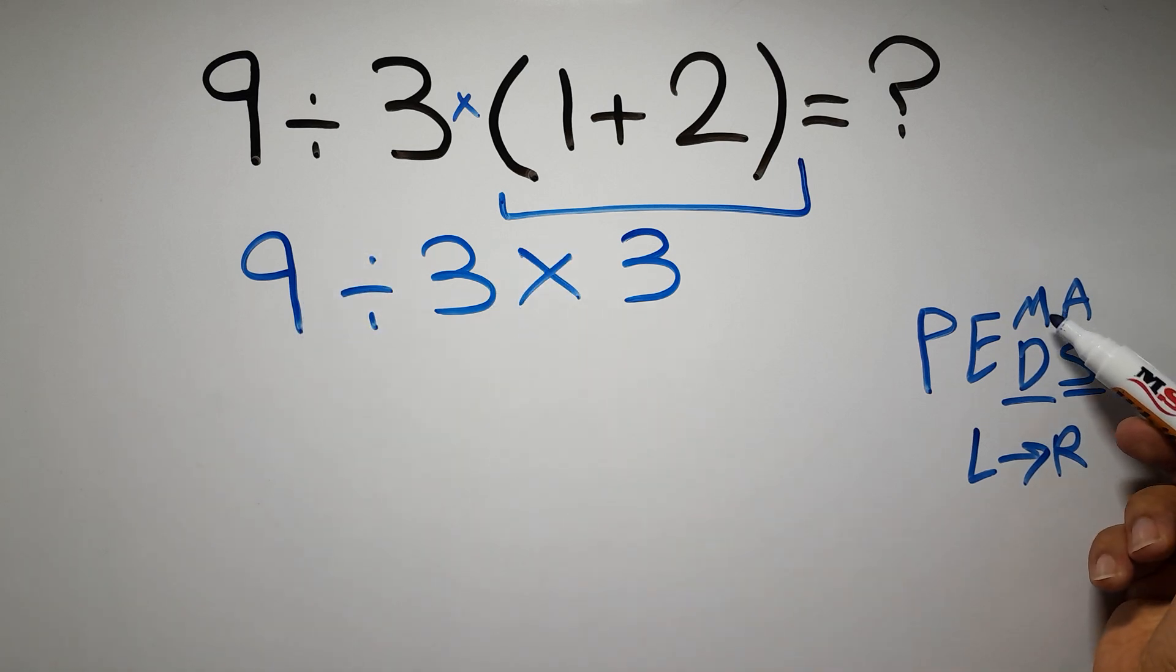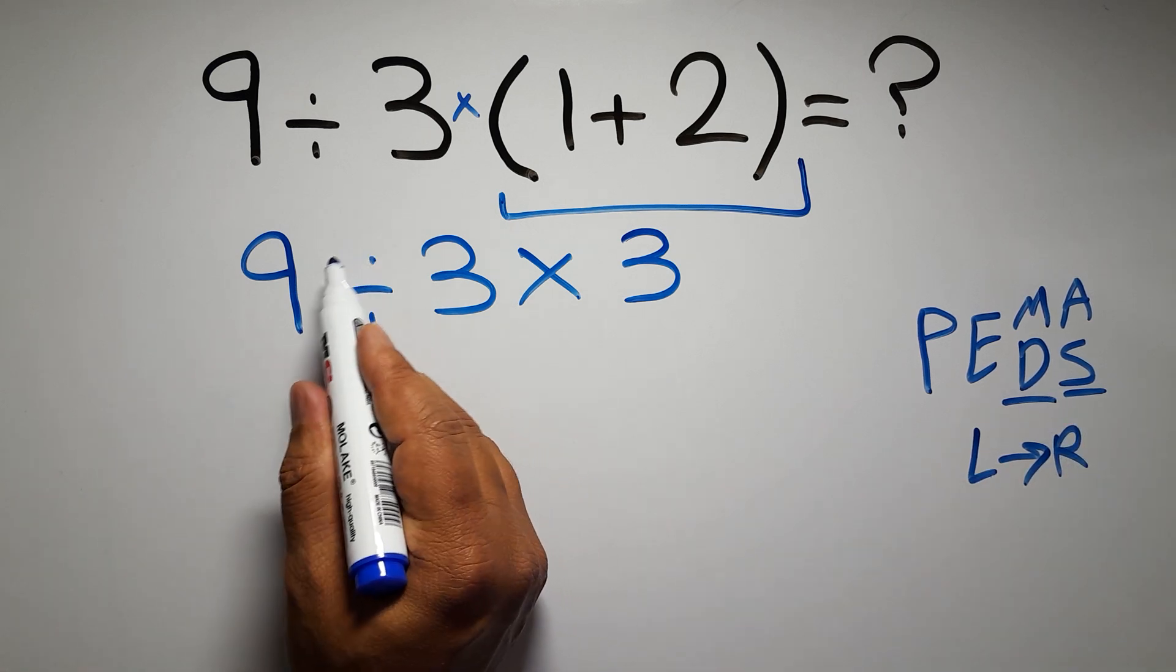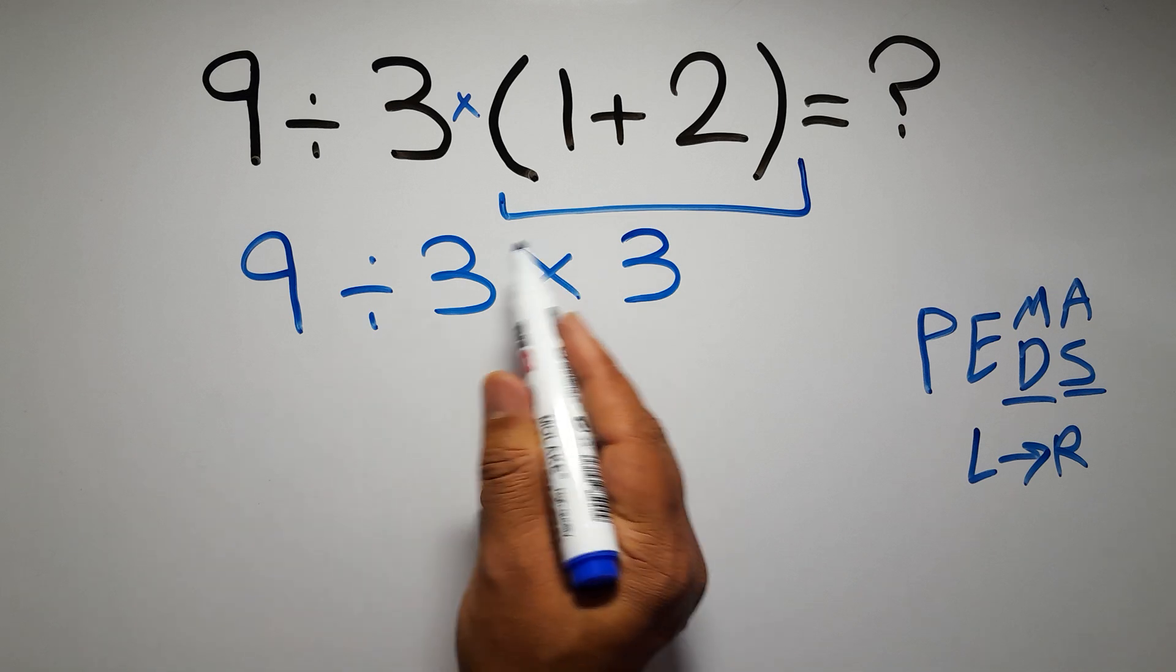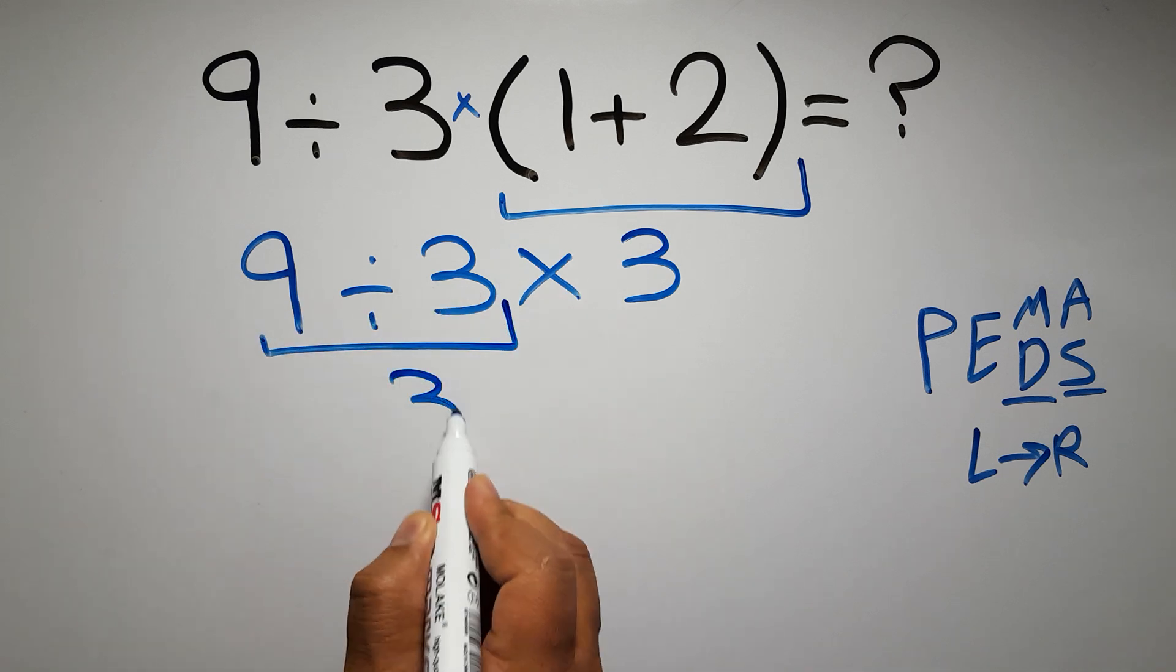As I said, multiplication and division have equal priority and we have to work from left to right. So here first we have to do this division, then this multiplication. Nine divided by three gives us three, and